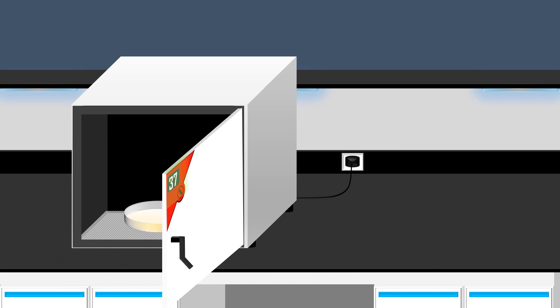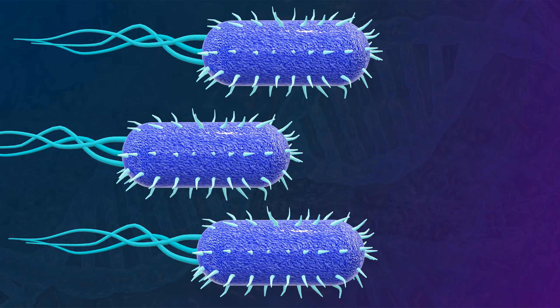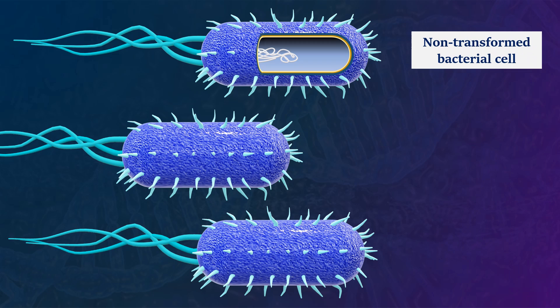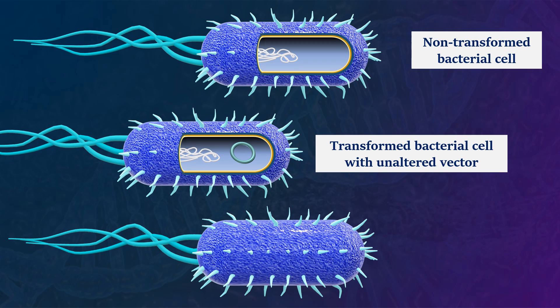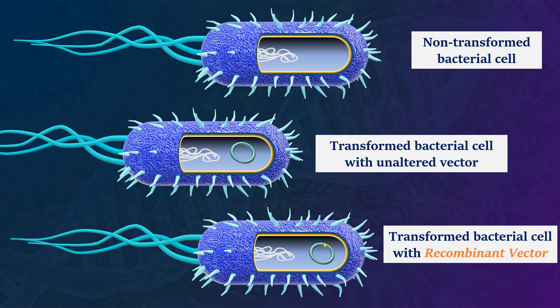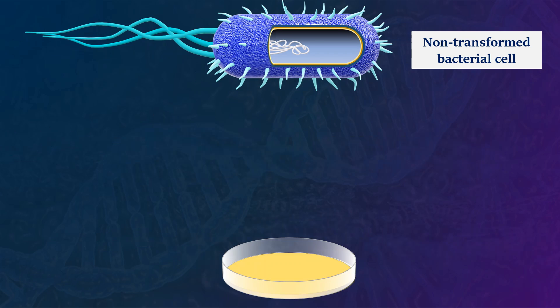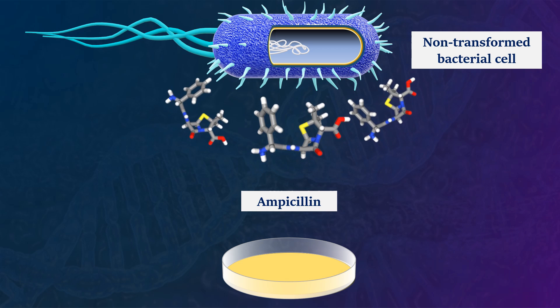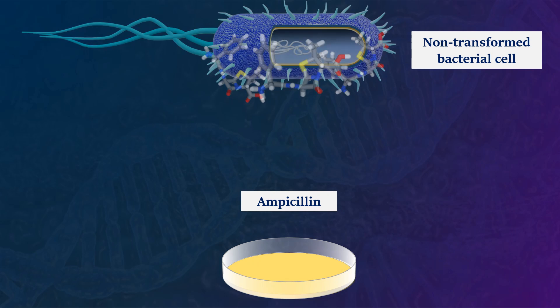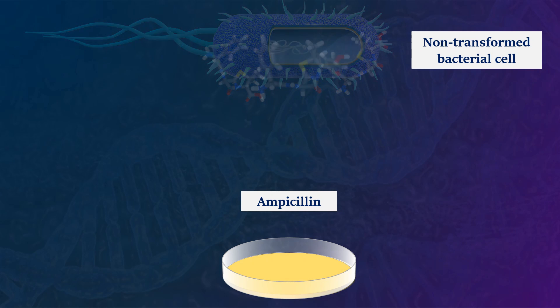Following the cloning process, three potential outcomes emerge. Firstly, the bacteria may not incorporate the plasmid, resulting in non-transformed bacterial cells. The second outcome involves transformed bacterial cells with an unaltered vector. Lastly, the third possibility entails transformed bacterial cells with the recombinant vector. The non-transformed bacterial cells will not survive in the culture medium. This is because the medium is supplemented with ampicillin, an antibiotic lethal to bacteria lacking the ampicillin resistance gene.